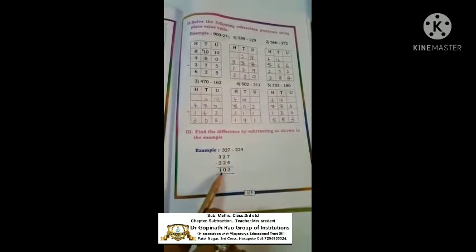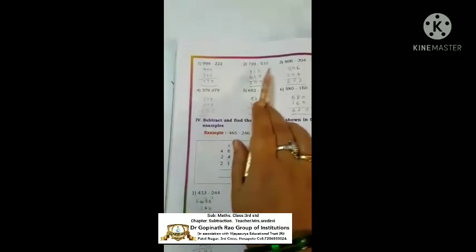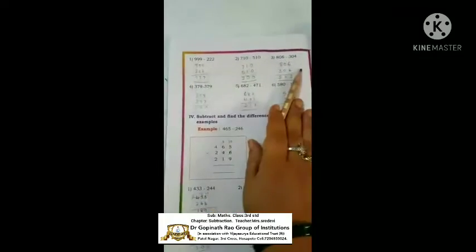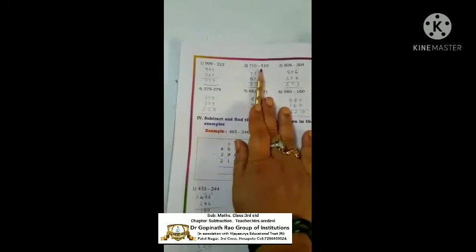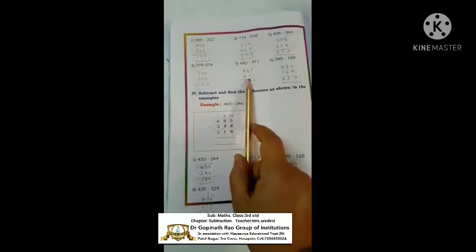Find the difference by subtracting — example: 327 minus 224. 7 minus 4 is 3, 2 minus 2 is 0, 3 minus 2 is 1. Same way, again subtraction — so many examples. You all do these by yourselves so that you'll become perfect in subtraction. I'll send notes for you all, but you solve all these on your own. After two days I'll send the notes. Here, some are without carrying and some are with carrying.